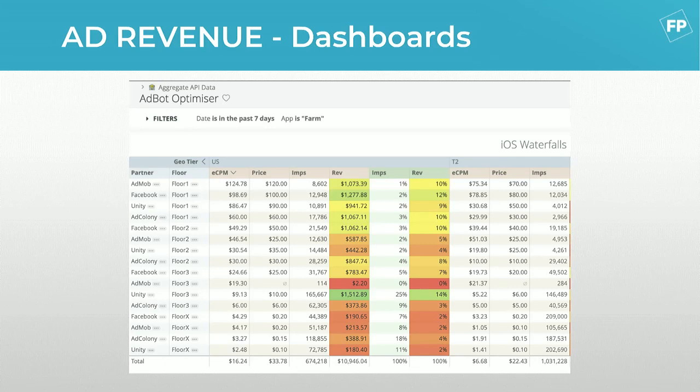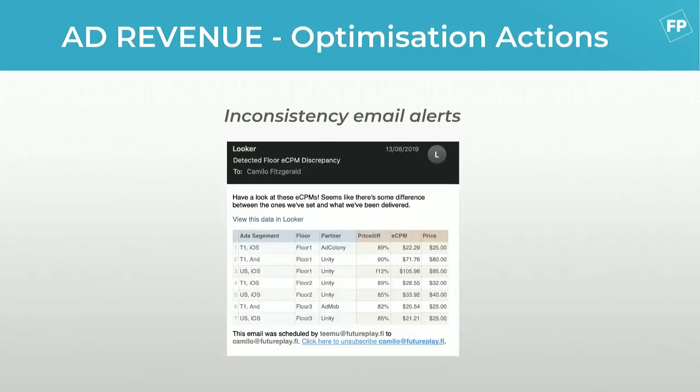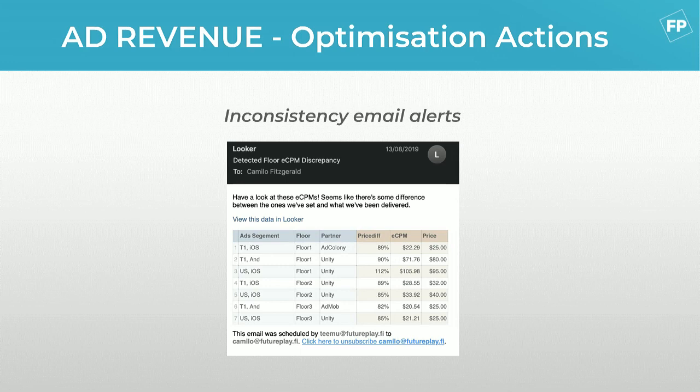We quickly discovered that checking this every few days was time consuming and we wanted to create actions from it. A neat Looker feature is that you can set up email alerts based on certain trigger conditions — for example, an alert that fires when there are inconsistencies between how much we're asking for in ECPM from a network and what they're actually delivering. This means we don't need to go in and check dashboards constantly — we just get told when there's an issue, so we can investigate or turn off that network if needed.